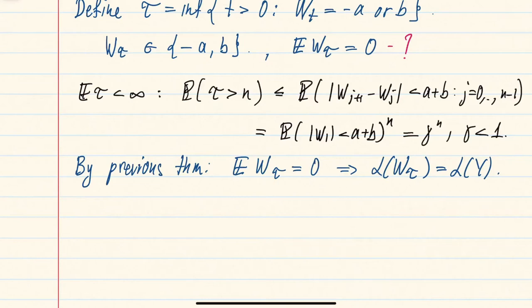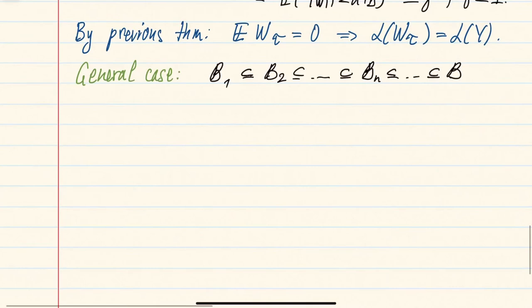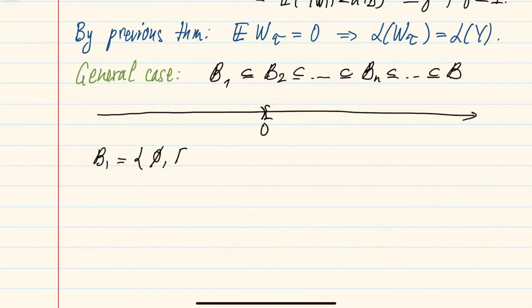For the general case, we start with a discretization procedure for Y. We construct an increasing sequence of sigma-algebras B_j on the real line as follows. The first sigma-algebra B_1 is generated by two intervals: (−∞, 0) and (0, ∞), so it consists of the empty set, the whole space, and those two intervals.